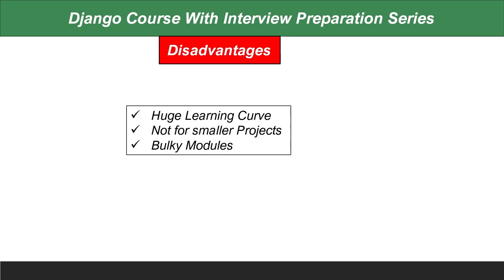The main disadvantage is a steep learning curve — you have to learn about models, views, templates, function-based components, authentication, database integration, third-party modules, model forms, admin panel customization, and more. Because of this, Django is not suitable for smaller projects. It also uses many bulky modules — you have to import a lot, like crispy forms and other third-party modules — which can be a problem at times.